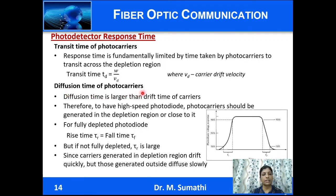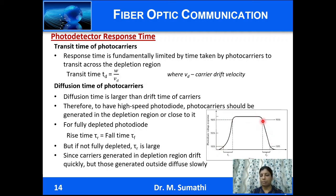Diffusion time is larger than drift time. Therefore, for high-speed operation, photocarriers should be generated within or close to the depletion region. The rise time is defined as the time taken for the output to go from 10% to 90% of the maximum value. If the photodiode is fully depleted, rise time equals fall time. If not fully depleted, the rise time is large because carriers in the depletion region drift quickly while those outside diffuse slowly.